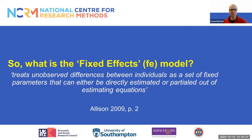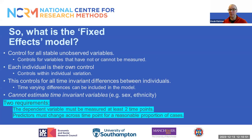So what are fixed and random effects models? Let's think about the fixed effects model first. Allison argues that a fixed effect model treats unobserved differences between individuals as a set of fixed parameters that can either be directly estimated or partialed out of estimating equations. This has some remarkable and useful properties. The fixed effect controls for all stable unobserved variables, including variables that have not or cannot be measured.